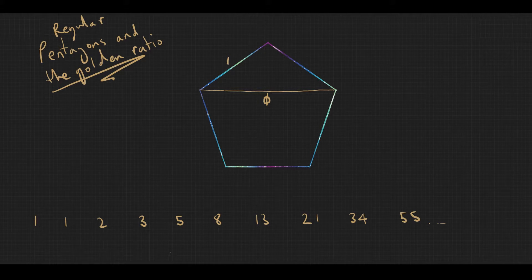The way this connects to the golden ratio is that if you divide consecutive terms as we go along, they tend towards the golden ratio. Here we go: 1 divided by 1 is 1, 2 divided by 1 is 2, 3 divided by 2 is 1.5.